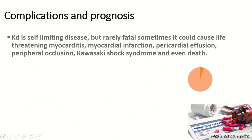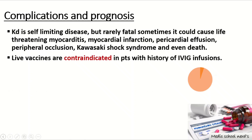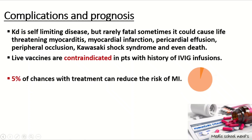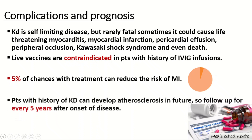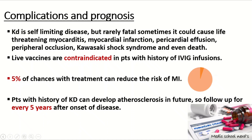Kawasaki disease is usually self-limiting over 10 to 12 days, but can be fatal. Life-threatening complications include myocarditis, myocardial infarction of the coronary artery, pericardial effusion, peripheral artery occlusion in the lower extremities, Kawasaki shock syndrome, and even death. With treatment, there is a 5% chance of myocardial infarction. Patients may develop atherosclerosis in the future, so follow-up should be every five years after disease onset. Live vaccines are contraindicated during IVIG infusions.